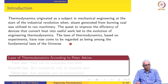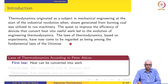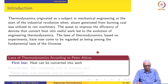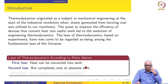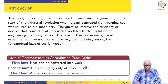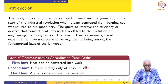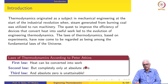Peter Atkins, a well-known chemistry professor who has written many books on physical chemistry and thermodynamics, sardonically states the laws of thermodynamics as follows. The second law says: heat can be converted to work, but completely only at absolute zero — meaning if you want to convert all of the heat into work, you need to be able to do it at absolute zero temperature. And the third law, according to him, is that absolute zero is unattainable. So basically he sums up the laws of thermodynamics: heat can be converted to work, but completely only at absolute zero, and absolute zero is unattainable.